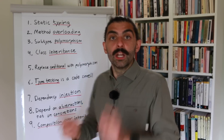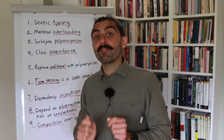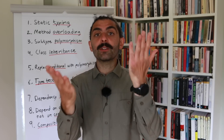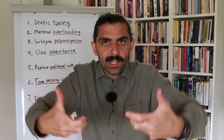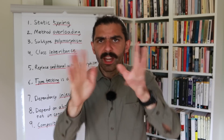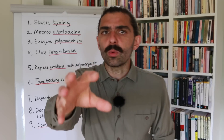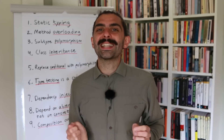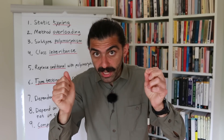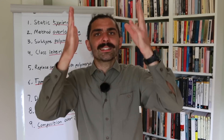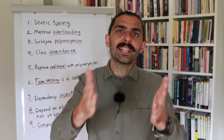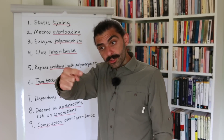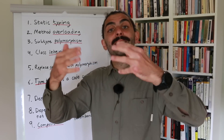Subtype polymorphism should only be used when we have a conditional where the branches are behaviorally different from each other. When I say behaviorally different, I mean we have different algorithms, different code — not just different data. If we don't have branches that are behaviorally different, then we don't need subtypes to capture the variation. We need objects. If all we have is data variation, then we just need a single class with a constructor that allows us to pass in the unique data.